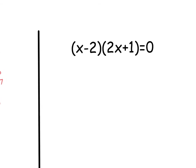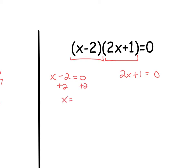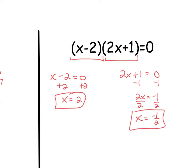For the last example here, we have two things multiplied together: x minus two, and 2x plus one. I'm going to set each of those equal to zero. On the first one, add two to both sides — we get x equals two. On the other one, subtract one and we get 2x equals negative one. Then divide by two and we get x equals negative one-half. So those are our two answers: two and negative one-half.